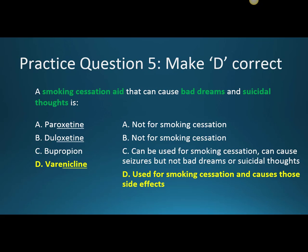Question five: A smoking cessation aid that causes bad dreams and suicidal thoughts is D, varenicline. These are noted side effects of this medication. A and B are incorrect because they are not used for smoking cessation. C, bupropion, is incorrect — even though it can be used for smoking cessation, it does not cause bad dreams or suicidal thoughts. The side effect to be concerned about with bupropion is seizures.